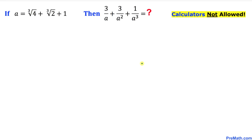Welcome to pre-math. In this video tutorial we have got this interesting algebraic problem as you can see over here. If a equals cube root of 4 plus cube root of 2 plus 1, then we are going to find the value of 3 over a plus 3 over a squared plus 1 over a cubed, and we are not supposed to be using calculators of any kind. Let's go ahead and get started with the solution.